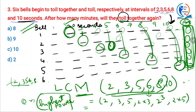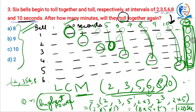So LCM = 2³ × 3 × 5 = 8 × 5 × 3 = 40 × 3 = 120 seconds. Now 120 is not in the answer options because they asked for minutes, not seconds. After doing all this, when you do not find the answer, do not get disappointed. When you are confident about the method, just read the question again. 120 seconds equals 2 minutes — that is the answer.